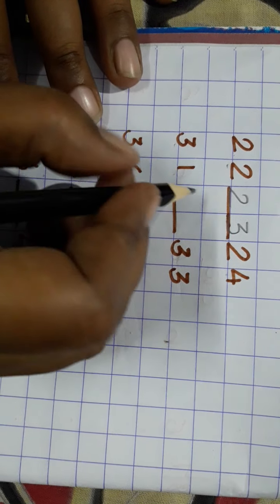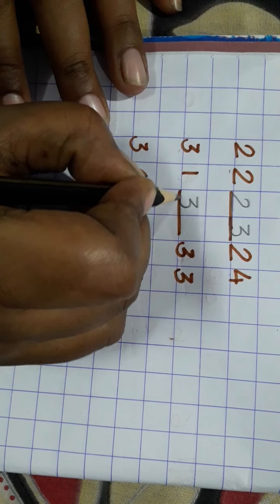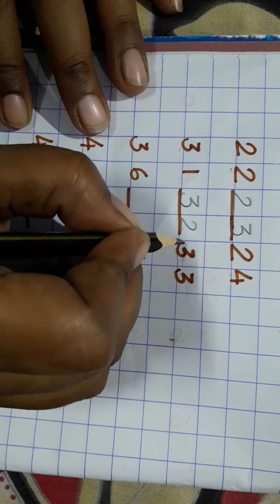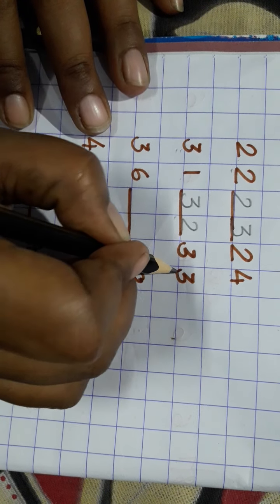31. What comes after 31? 32. What comes before 33? 32. 31, 32, 33.